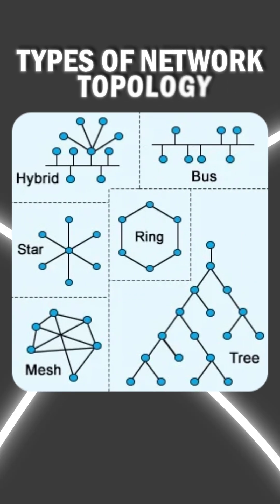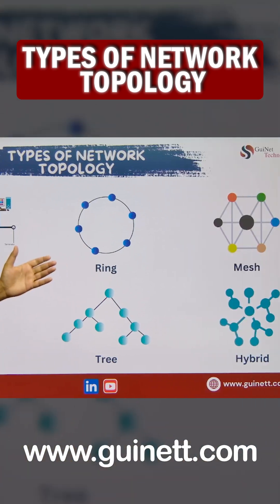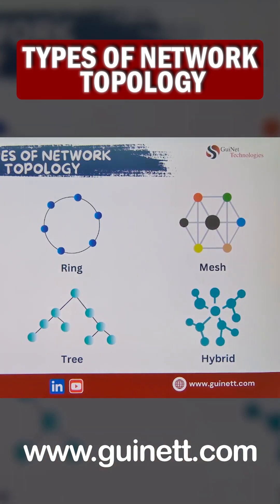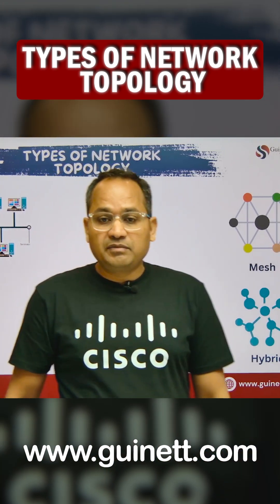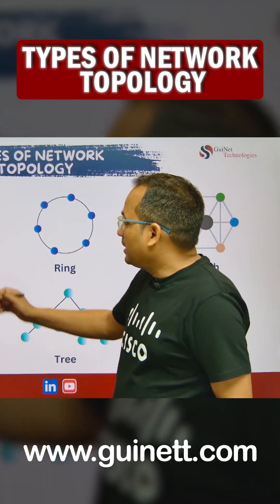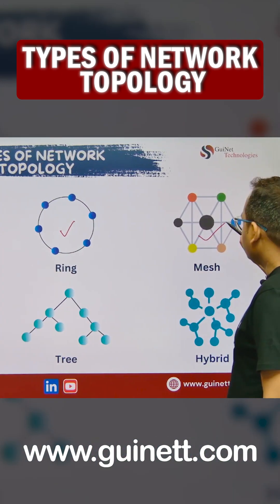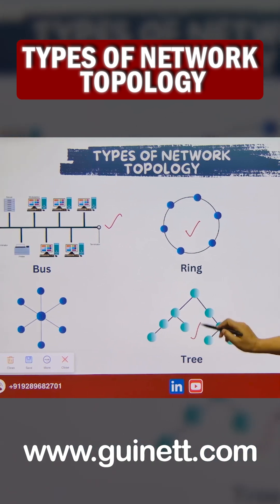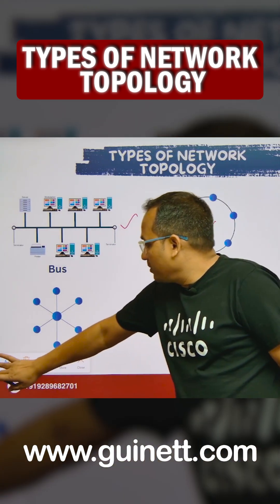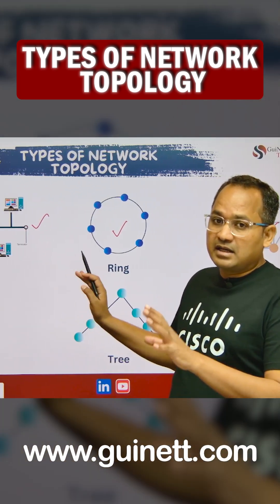We have to understand the types of network topologies. We have the bus network topology, ring network topology, full mesh network topology, star network, tree network, and hybrid network. These are the different diagrams you can see — for bus we have this diagram, ring we have this diagram, mesh we have this diagram, hybrid we have this diagram, tree we have this diagram, and this is going to be a star. By seeing these diagrams, you are understanding how each topology is connected.